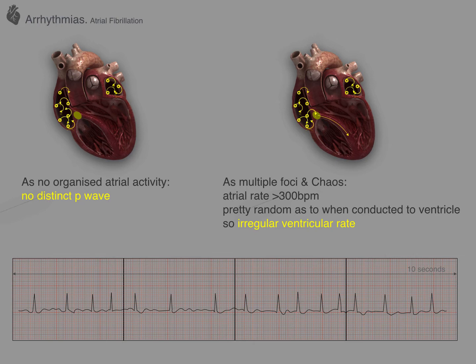Because there is no organized electrical signal coming from the SA node, there is no distinct P wave on the ECG. The multiple foci and chaotic activity in the atria in atrial fibrillation is usually running at over 300 beats per minute, and it is the AV node that is stopping all of that activity getting through to the ventricles. It can be quite variable how much of those electrical impulses are passing through, making the ventricular rate variable and irregular.